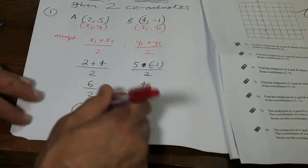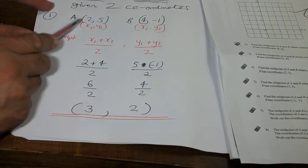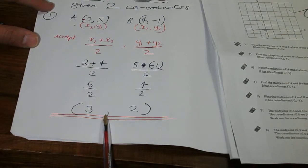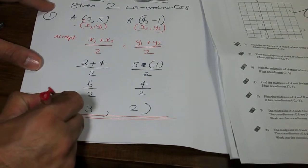So we have finished that question. And we have worked out the midpoint of 2, 5 and 4 minus 1, which gives us an answer of 3, 2. So I'm going to add my midpoint.